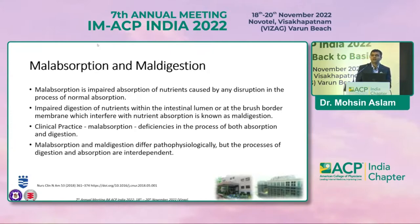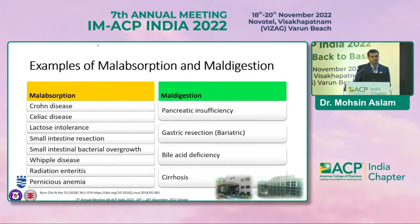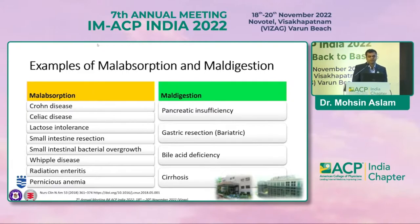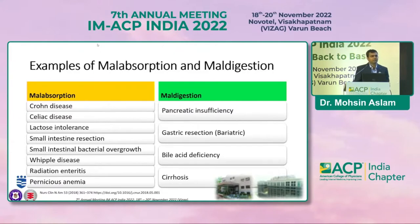Malabsorption and maldigestion differ pathophysiologically, but these two processes are interdependent. Conditions causing malabsorption include Crohn's disease, celiac disease, lactose intolerance, small intestinal resection or bacterial overgrowth, Whipple's disease, radiation enteritis, and pernicious anemia. Maldigestion results from enzyme deficiencies such as pancreatic insufficiency causing fat malabsorption, gastric resection, and bile acid deficiencies secondary to hepatobiliary obstruction and cirrhosis of the liver.